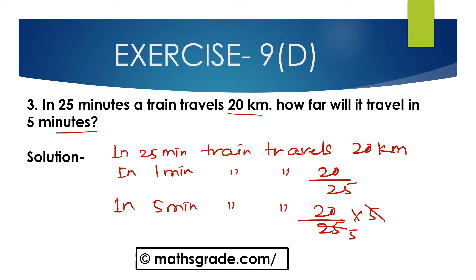5 times 5 is 25. Now cancelling 5 with 20, we get 4. 5 times 4 is 20. So this is 4 km. The answer is 4 km. The train will travel 4 km in 5 minutes.